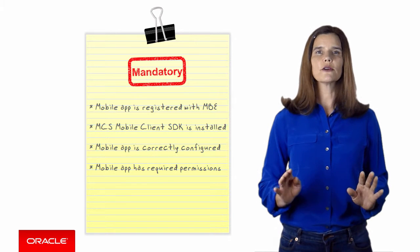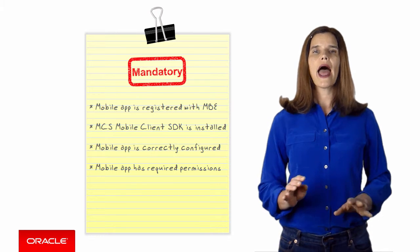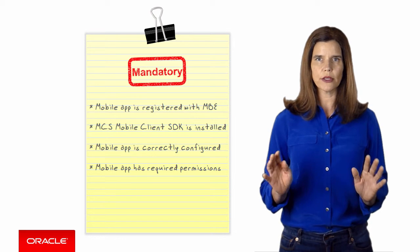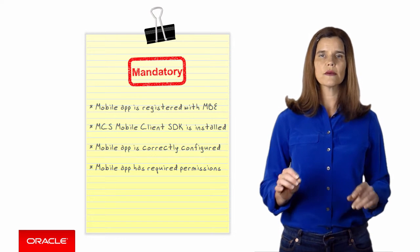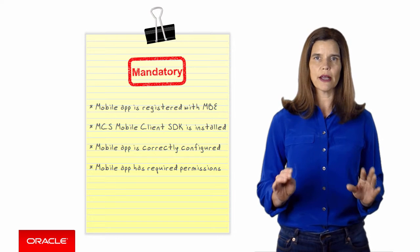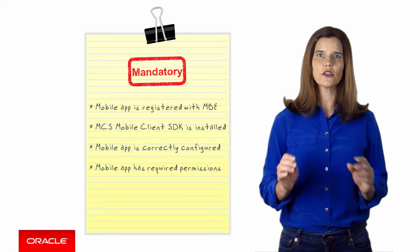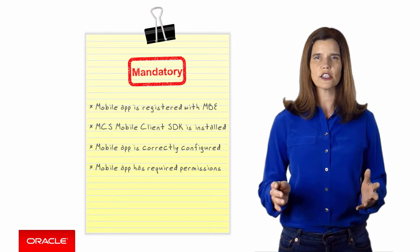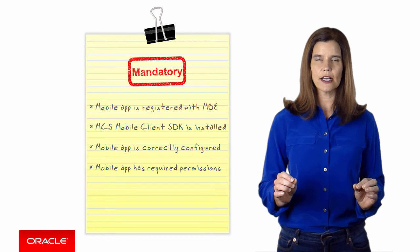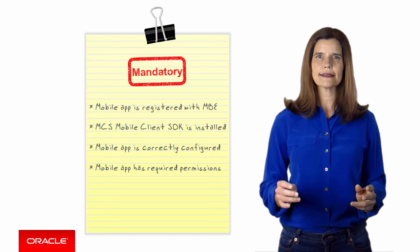So you've confirmed that the MCS Mobile Client SDK is installed, and that the analytics capabilities are available and properly configured. Now, when someone uses your mobile app, the app can send information about system events to MCS, and you'll be able to view reports about users, sessions, and API calls. If you want to see data on custom events, though, you need to write some code. Let's see how to do that next.